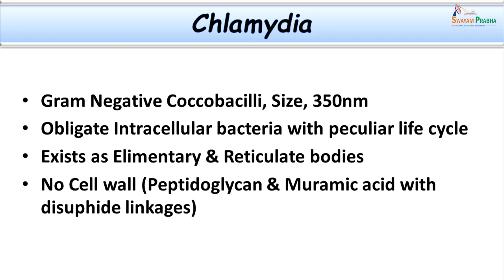The peculiar characters of Chlamydia are that they exist in two different forms. One is the elementary body, which is the metabolically inactive form, and the other is the reticulate body, which is metabolically active and is the dividing stage of the organism. An important character is that they do not have a cell wall. However, the elementary bodies have a peptidoglycan layer with muramic acid linked by disulfide linkages, and the presence of these chemicals gives the elementary body stability.